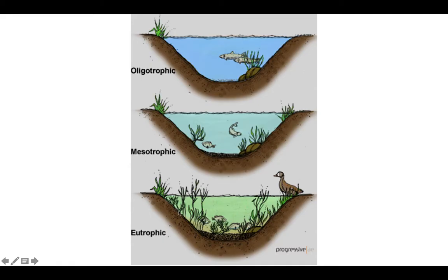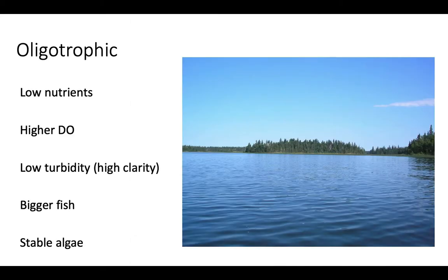A eutrophic lake has lots of algae, is kind of green, has a lot of decomposed matter at the bottom, and no big fish. The opposite end of that spectrum is an oligotrophic lake, which is a much, much healthier ecosystem. An oligotrophic lake has low nutrients, higher dissolved oxygen, low turbidity — meaning the water is very clear and sunlight can penetrate through — bigger fish, stable algae populations, and probably more robust food chains in general.